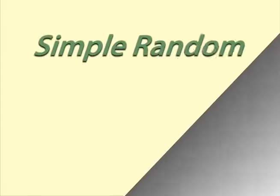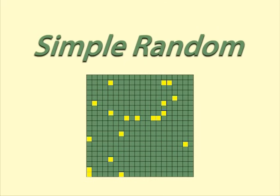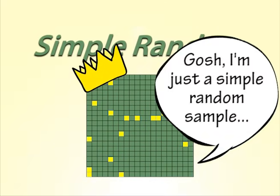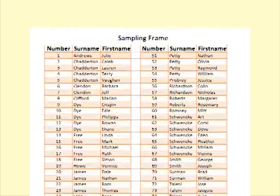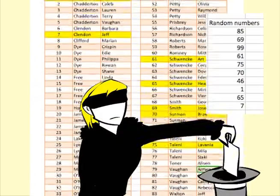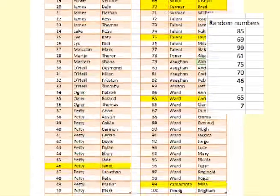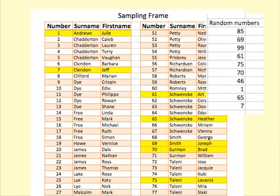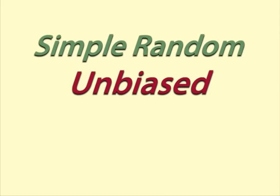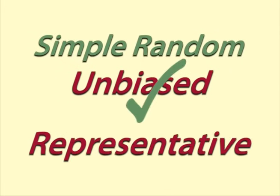Simple random sampling is theoretically the ideal method of sampling. You list each member of the population and use random numbers to decide which objects are in the sample. Each object is equally likely to be selected. This produces an unbiased sample, which we hope is representative.